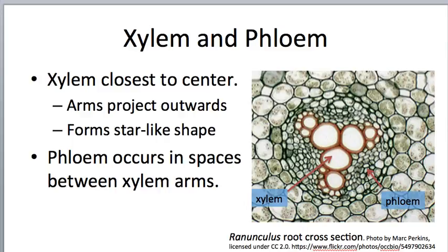Returning now to the vascular cylinder to look at xylem and phloem — we've seen xylem and phloem in leaves and stems, so you already have some idea of what they should look like. In the stem, xylem was closer to the center and phloem closer to the edge — the same is true in the root. The difference is that in the root the xylem is directly in the middle and forms a star-like shape — in this case a simple star with three appendages, though in some cases there could be many more. The phloem occupies the spaces between the xylem arms.